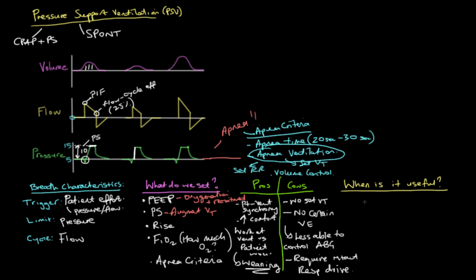When is pressure support ventilation useful? The big one to take away is weaning. There is literature about using spontaneous ventilation and pressure support ventilation in critical illness, but we'll get into that later. For now, the big one is weaning — we want to allow patients to slowly take over their own work of breathing.